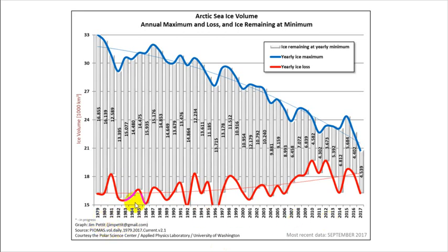We might need every single year because we've got a value — the bars are the volume of ice remaining at the end of the season when ice is at its minimum. The blue line is the yearly ice maximum, the red is the calculated ice loss every year, and then the ice remaining at the yearly minimum as a volume. There's a ton of information here: trend lines, and the minimum amount of ice remaining at the end of every season, labeled specifically — very data-rich and showing a trend over time.